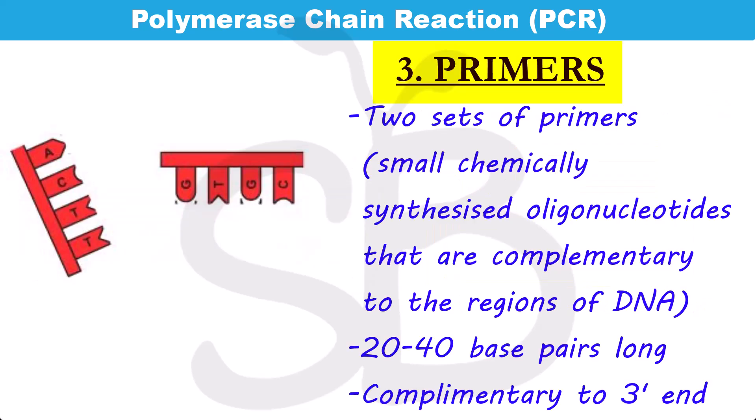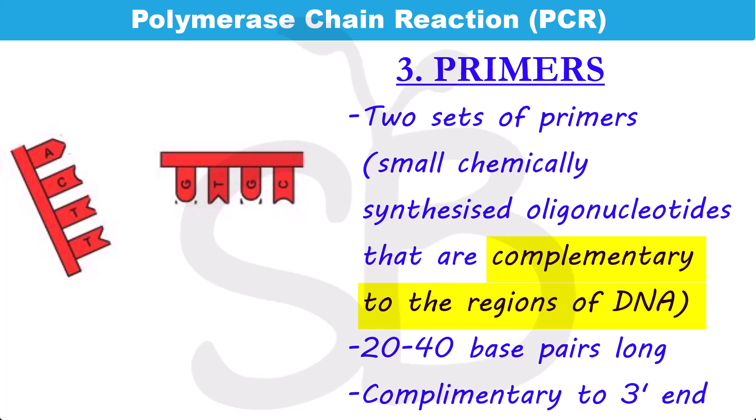We can see that there are two sets of primers. Primers are oligonucleotides that are complementary to the regions of DNA. We have a complementary DNA sequence at the start of the DNA sequence. Primers are typically 20 to 40 base pairs long. We need primers to initiate the DNA polymerase process and start the DNA synthesis.